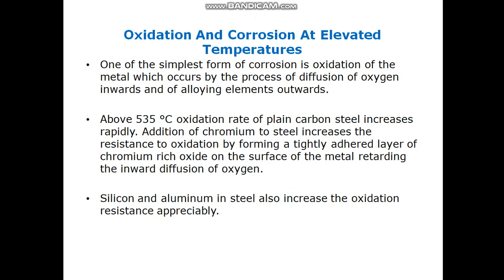One of the simplest forms of oxidation is corrosion, and it occurs by the process of diffusion of oxygen inwards and alloying elements outwards. This phenomenon becomes very significant when the surface temperature is about 535 degrees Celsius. The oxidation rate of plain carbon steel increases rapidly, but chromium in the composition increases the resistance to oxidation because chromium forms a tightly adhered layer of chromium oxides on the surface of the metal, reducing the inward diffusion of oxygen.